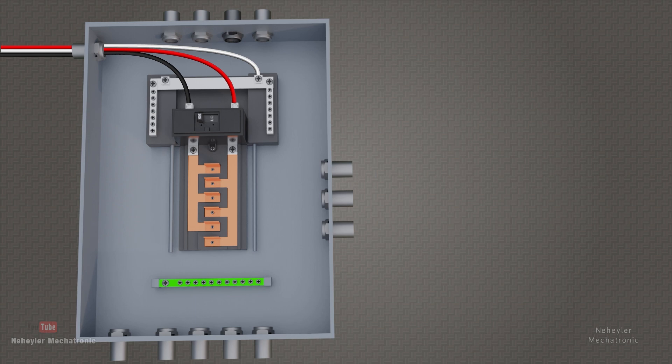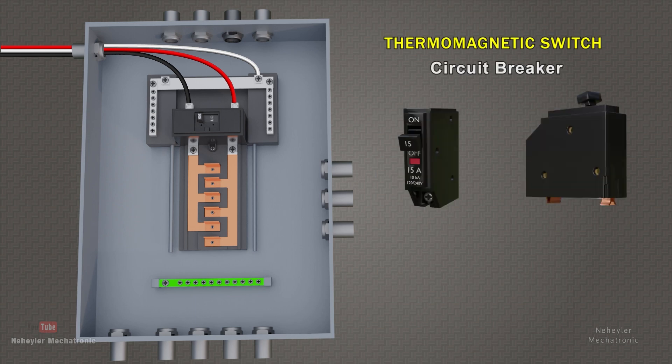A load center or electrical panel can consist of thermomagnetic switches with standard protection against overload or short circuit. For this case, a single-pole circuit breaker circuit is shown, where generally some technical data is printed on the front, such as the nominal current, which in this case is 15 amperes. Maximum short circuit current and voltage.